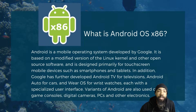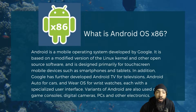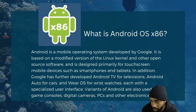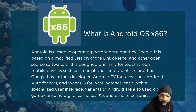First of all, what is Android OS x86? Android is a mobile operating system developed by Google. It is based on a modified version of the Linux kernel and other open-source software, and is designed primarily for touchscreen mobile devices such as smartphones and tablets. Google has further developed Android TV for televisions, Android Auto for cars, and Wear OS for wristwatches, each with a specialized user interface. Variants of Android are also used on game consoles, digital cameras, PCs, and other electronics.